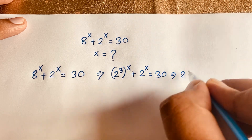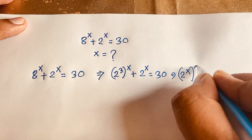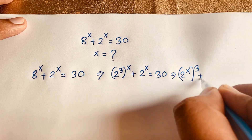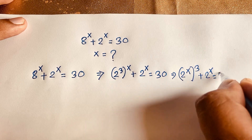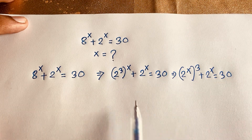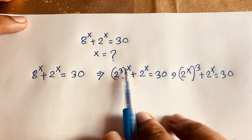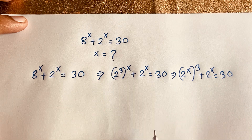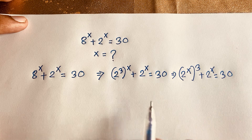This expression becomes: 2 to the power x, whole to the power 3, plus 2 to the power x is equal to 30. According to exponential law, we know that a to the power n, whole to the power m, is equal to a to the power nm. I can just move this exponent inside the bracket.